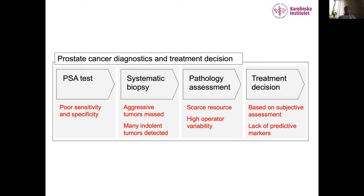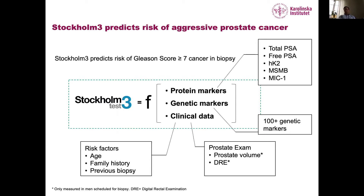A fourth reason for high prostate cancer incidence and mortality is that treatment decisions rely on very incomplete and noisy data, with no predictive biomarkers at all for prostate cancer. Compare this to breast cancer, where you have specific treatment-predictive biomarkers like HER2. We have worked very systematically to improve all aspects of the prostate cancer diagnostic and treatment chain.